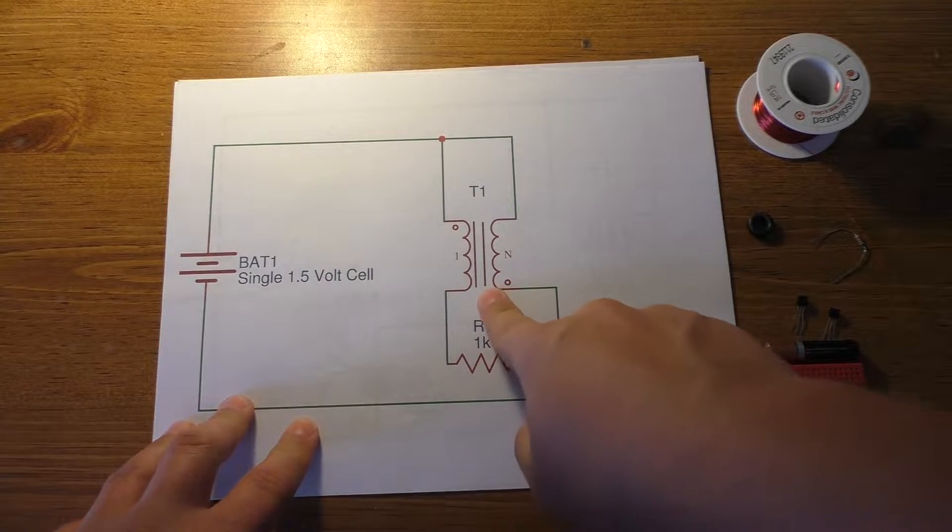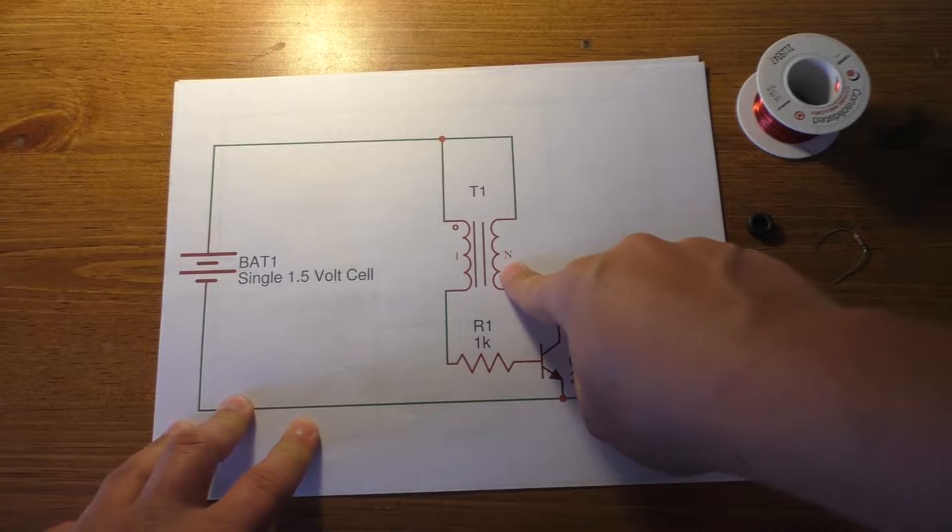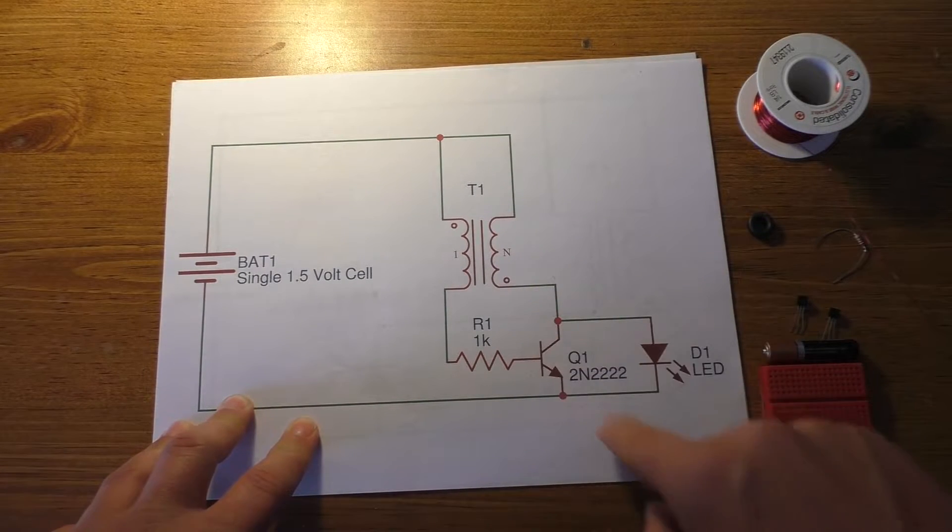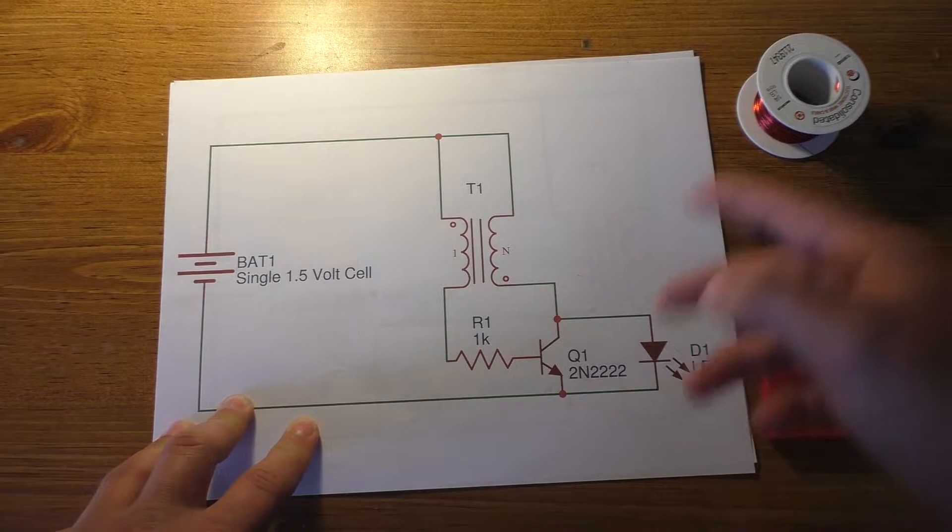And then what happens here is when this turns off, you get a very high voltage spike that comes out of this inductor. And then that feeds through your LED and lights it up.